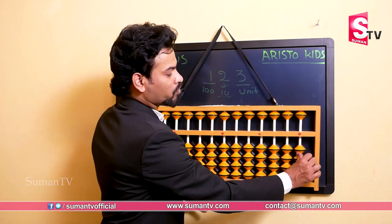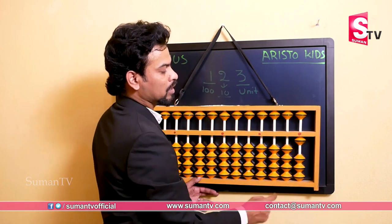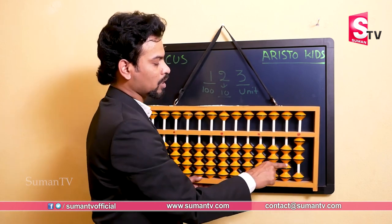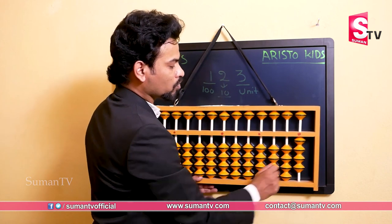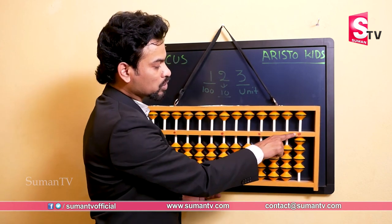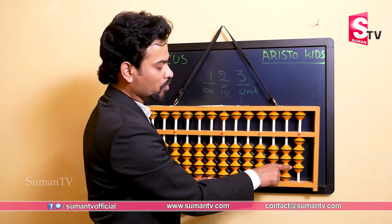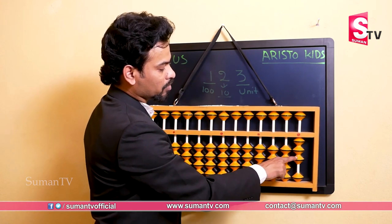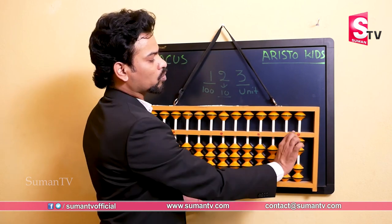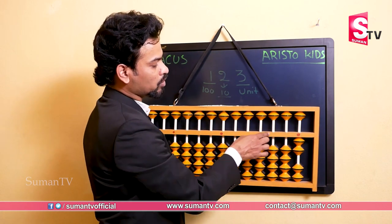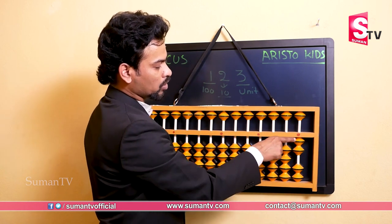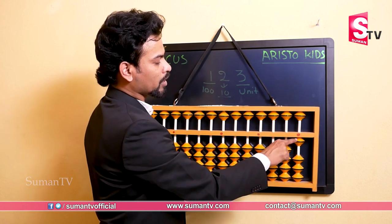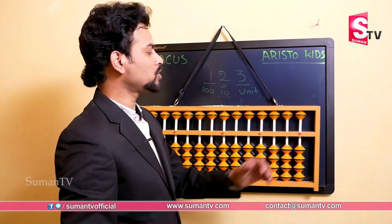So, one bead from down to up touching the beam is plus one. Again plus one — two. Again plus one — three. Again plus one — four. If a bead goes down away from the beam, that is minus. From four subtract one — three; subtract one more — two. We count only the beads touching the beam. Subtract one more — one. Subtract one more — zero.